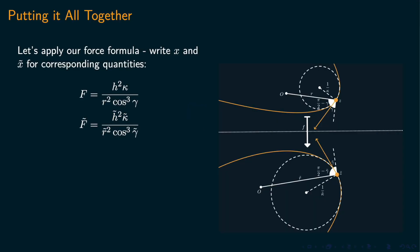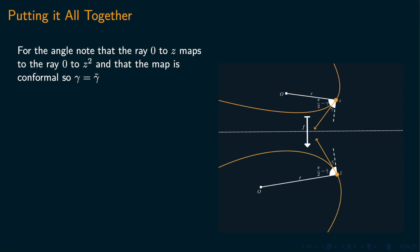Now we would like to relate tilde f and f. We need to relate gamma to gamma tilde. Note the ray through z maps to the ray through z squared. And that the map is complex differentiable, so conformal, so the angle is preserved. So we get that gamma tilde equals gamma.